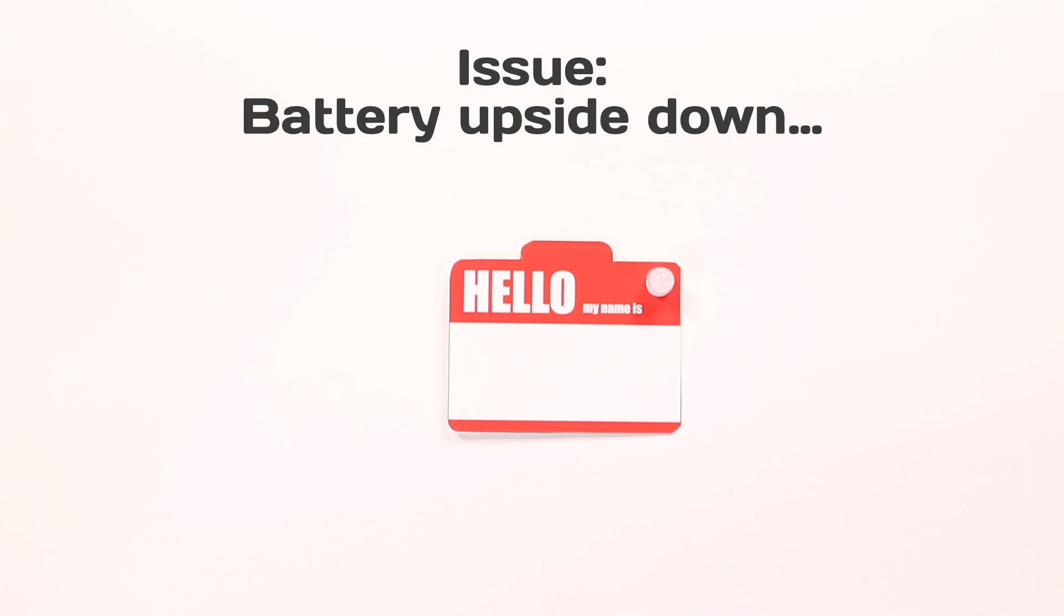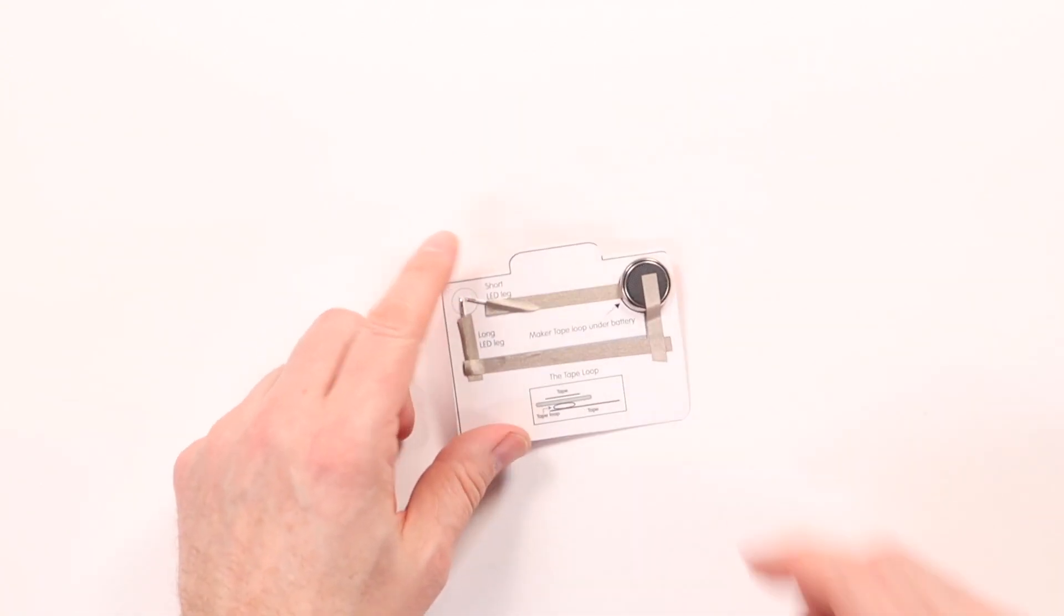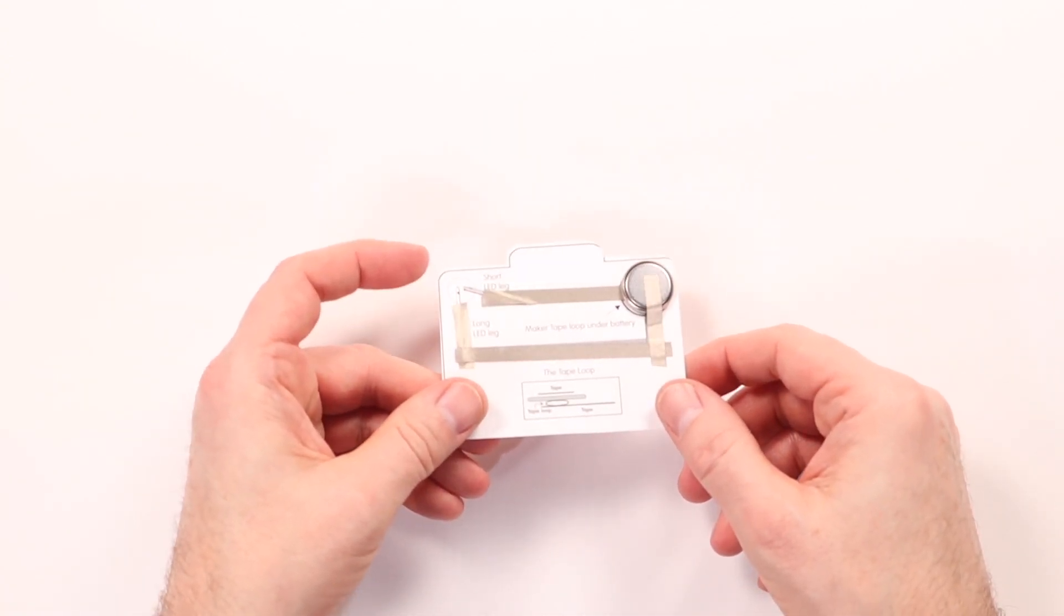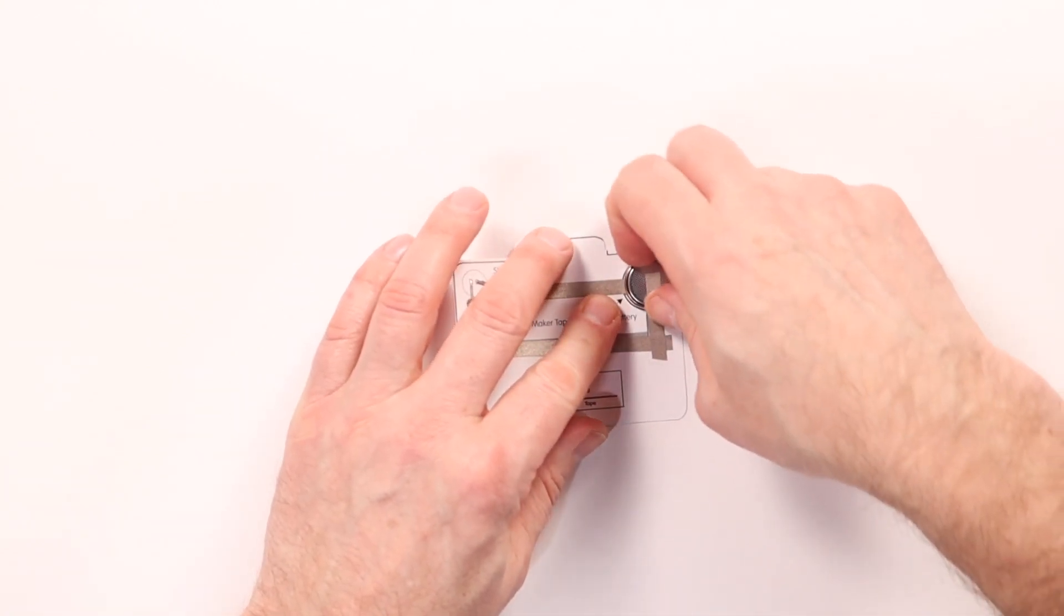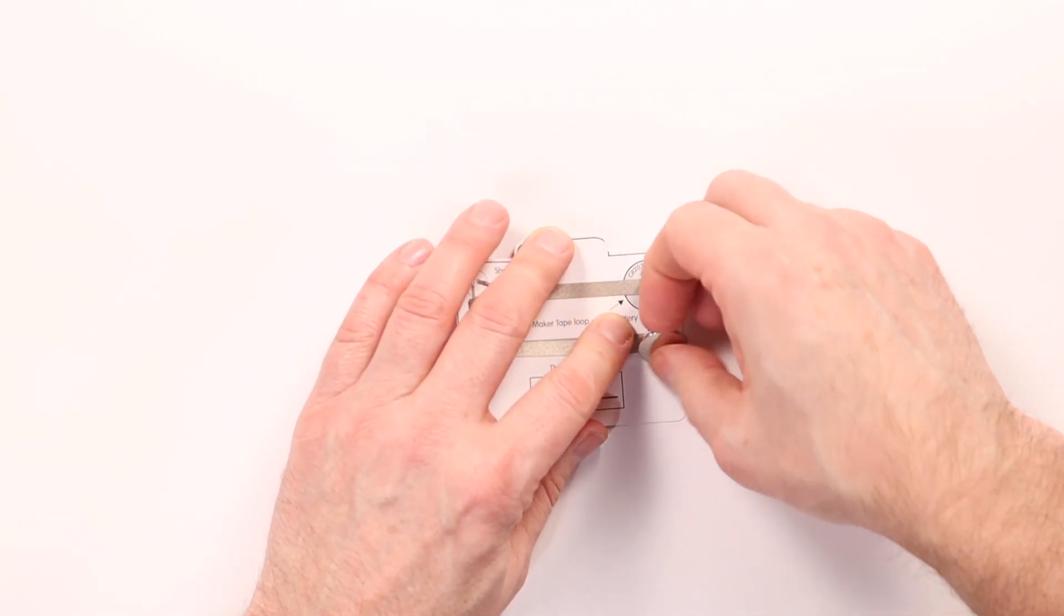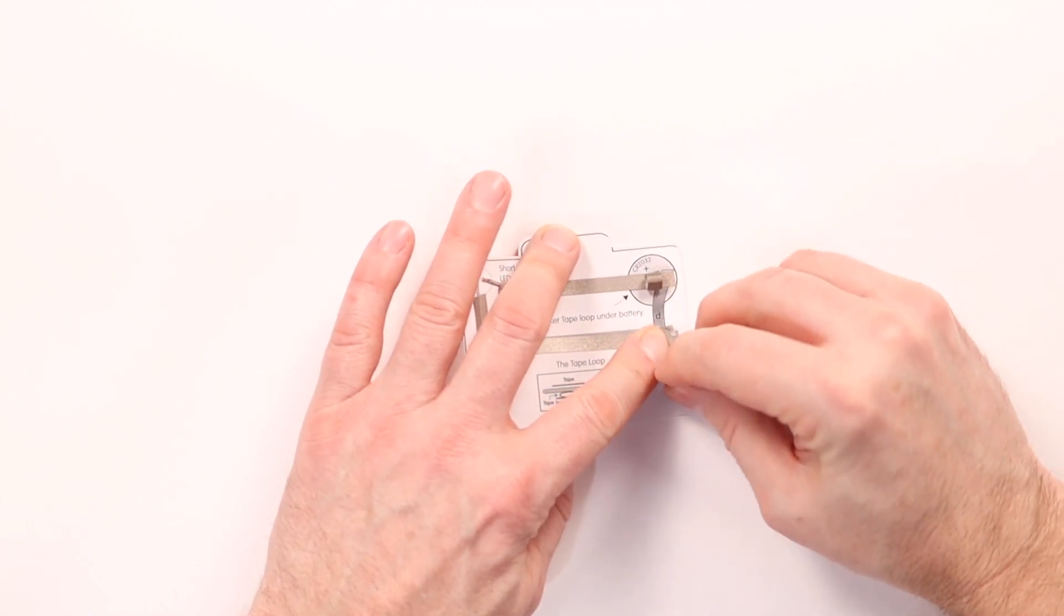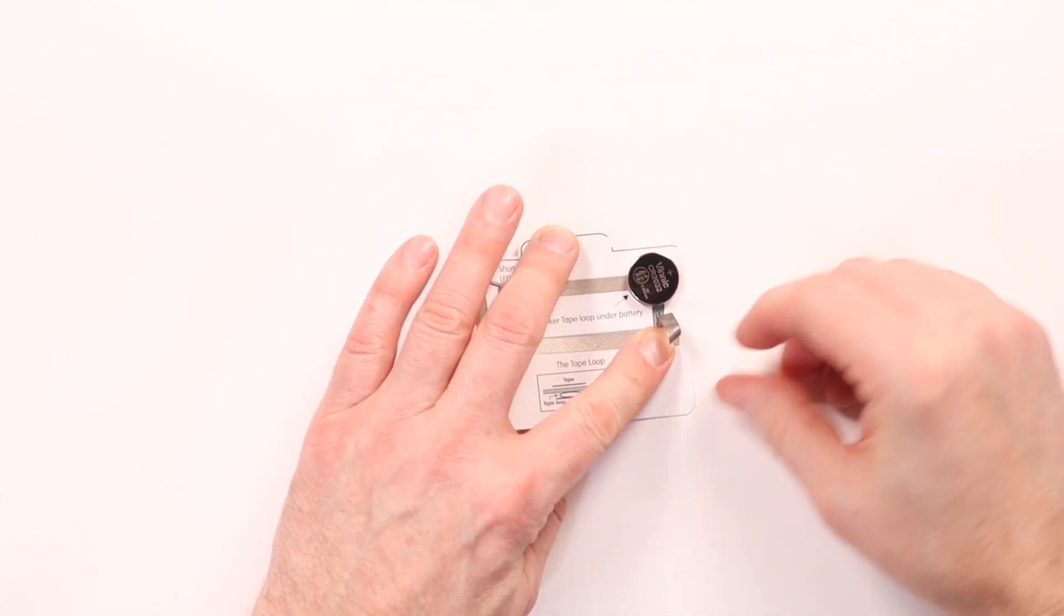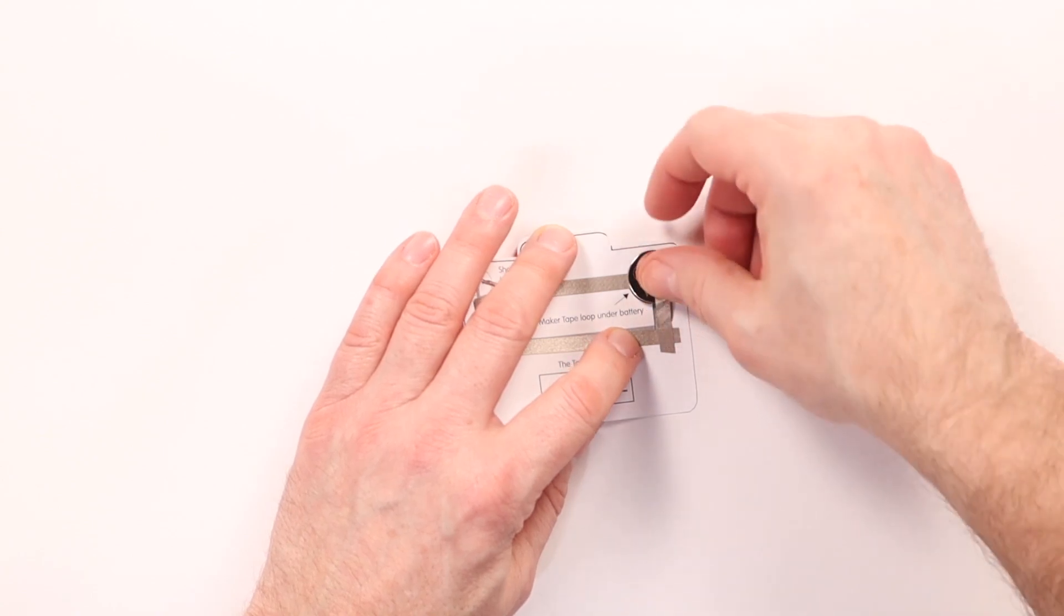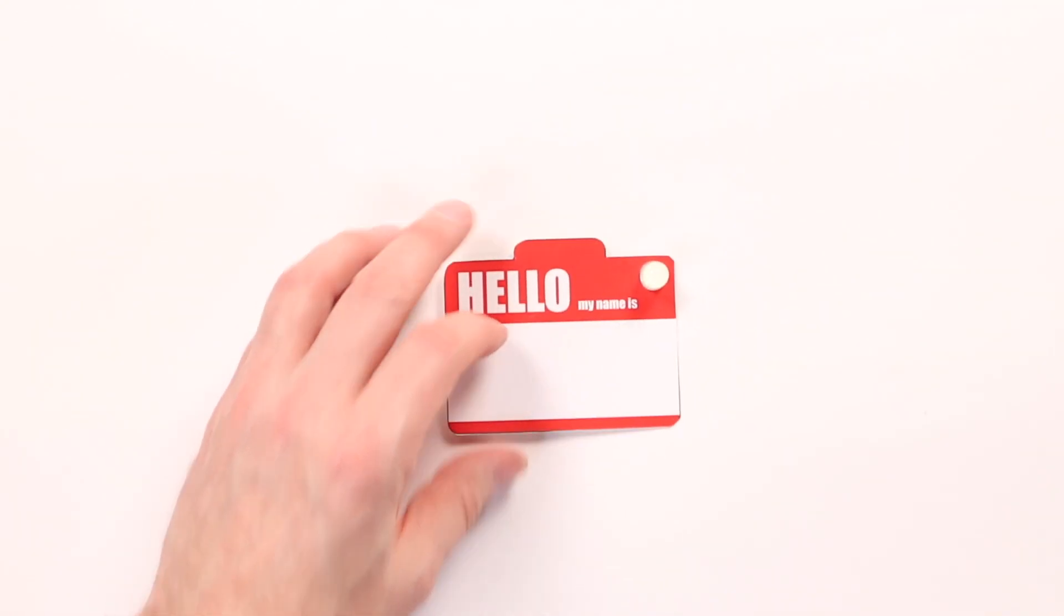Another badge that doesn't light up. Let's take a look. Okay, for this one, we can see the battery is actually upside down. So that's an easy fix. We're going to remove that battery, flip it over so the plus side is up, put our tape back on, and that should light up.